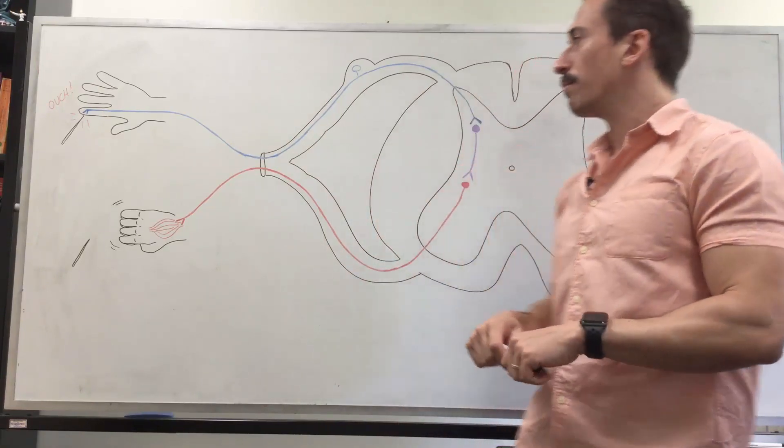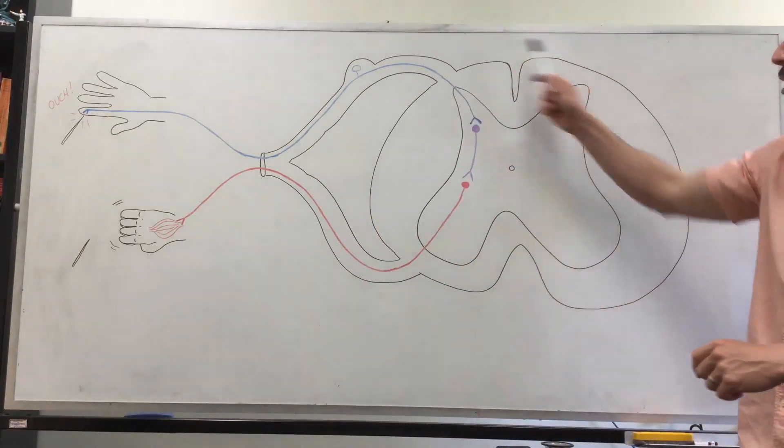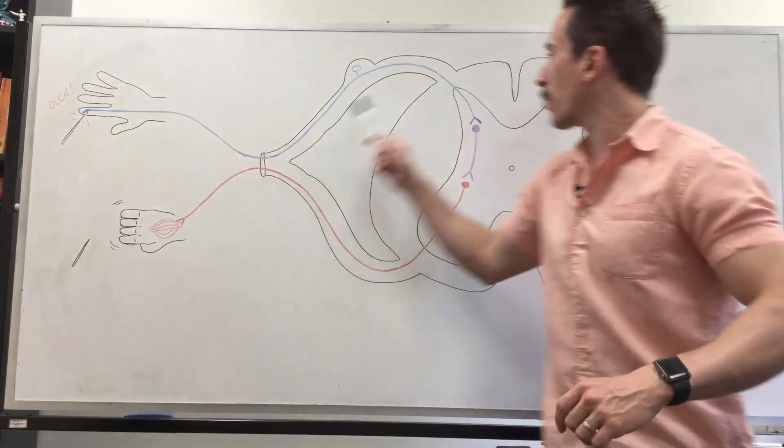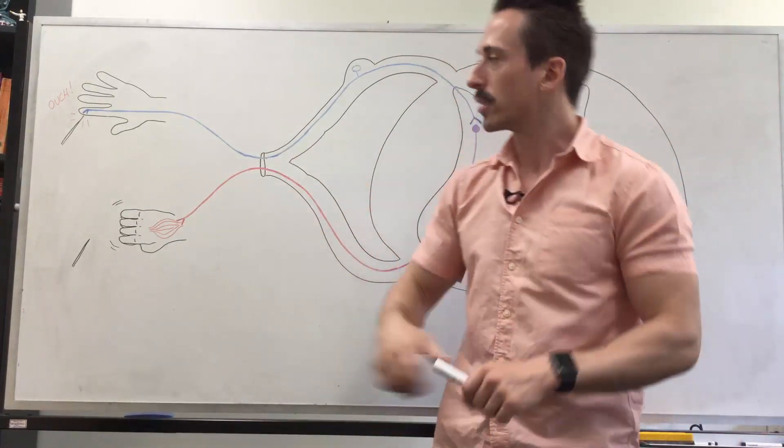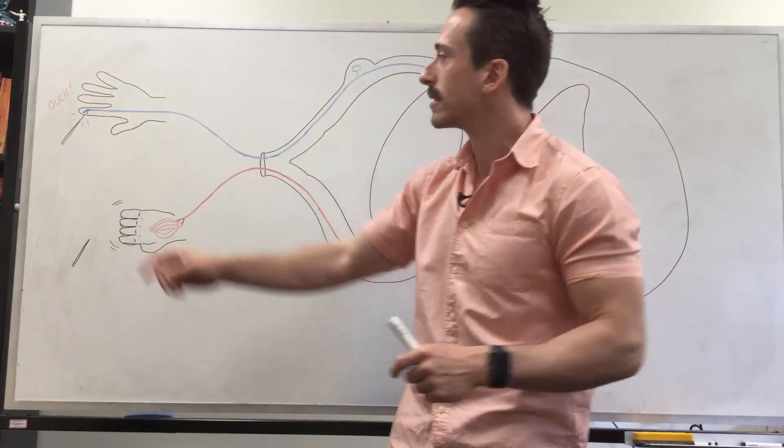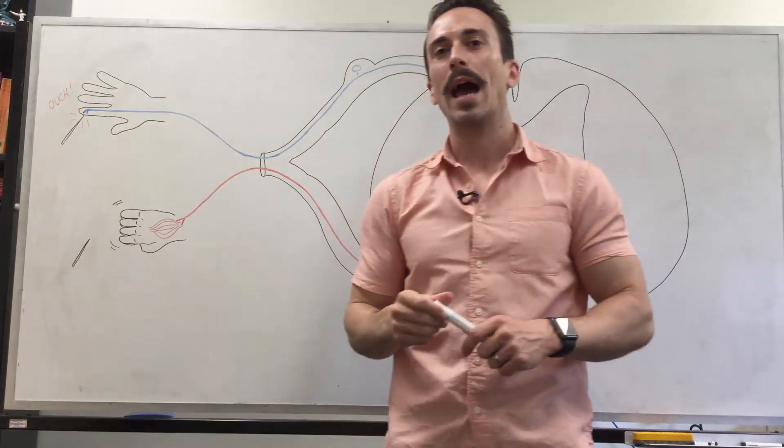Let's work through these five components. I've drawn up here a spinal cord and we're going to go through the simple reflex arc. First thing is I've drawn up a hand and this hand has now been pricked by a needle.